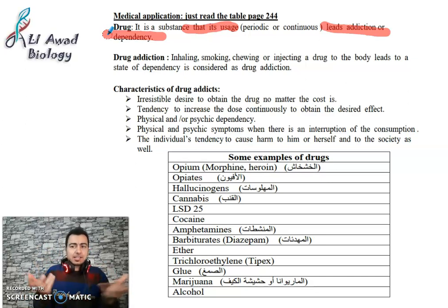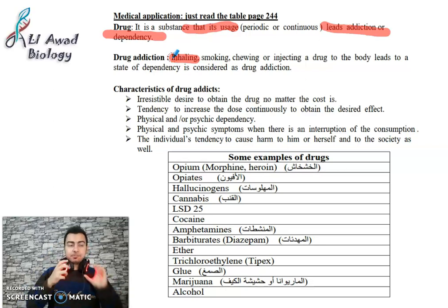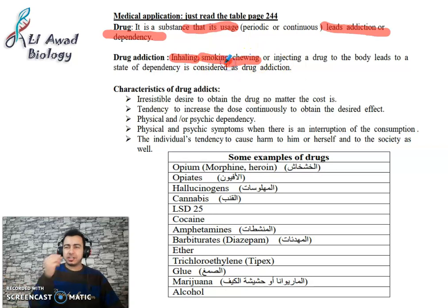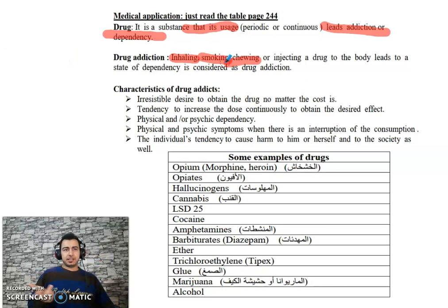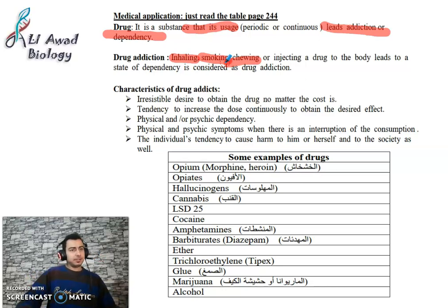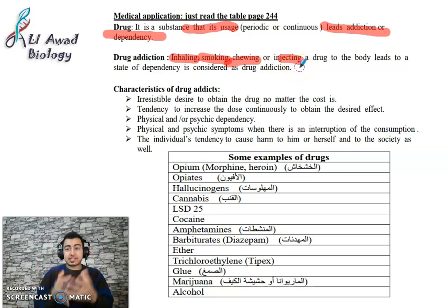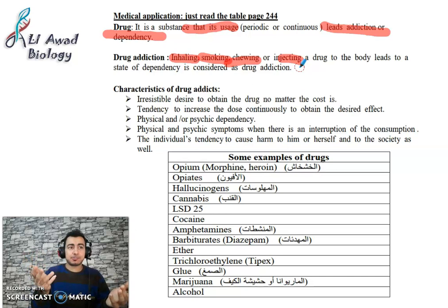How do we take drugs? We can take drugs by inhaling them, like cocaine — we can inhale them — or some types of medical drugs are taken by inhalation. Smoking — we can smoke them. Chewing — some drugs are chewed, like khat, which is common in Yemen. Or by injecting, like morphine and heroin. All these types of consumption — injection, chewing, inhalation, smoking — lead to dependency.